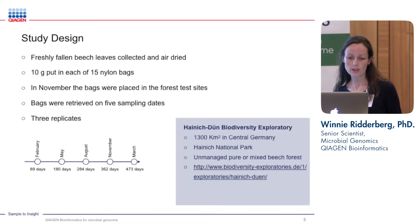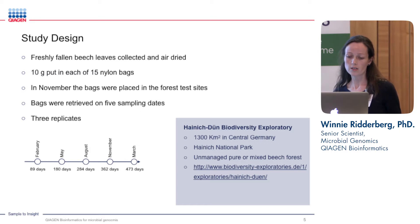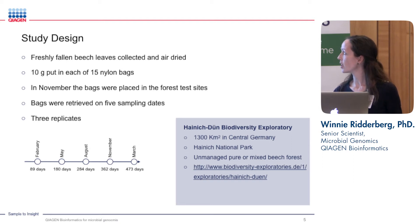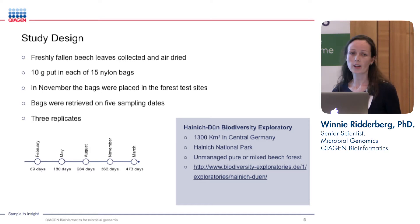The authors collected freshly fallen beech leaves and air dried them. They were collected in the Hainich-Dün Biodiversity Exploratory, which is a large site in central Germany. Part of the exploratory is the Hainich National Park, consisting of unmanaged either pure or mixed beech forests. After air drying the leaves, they put 10 grams into each of 15 nylon bags, and then in November, when the leaf fall period had ended, they placed the bags on the forest site. They retrieved the bags on five different sampling dates, collecting three replicates each time.